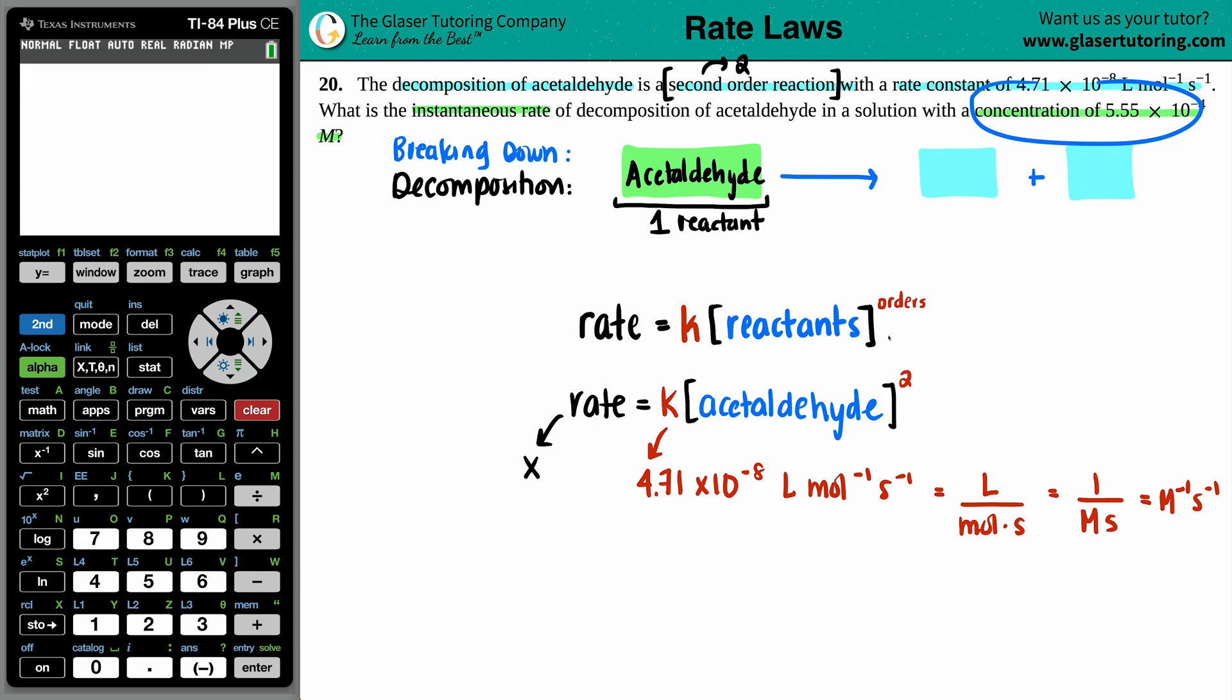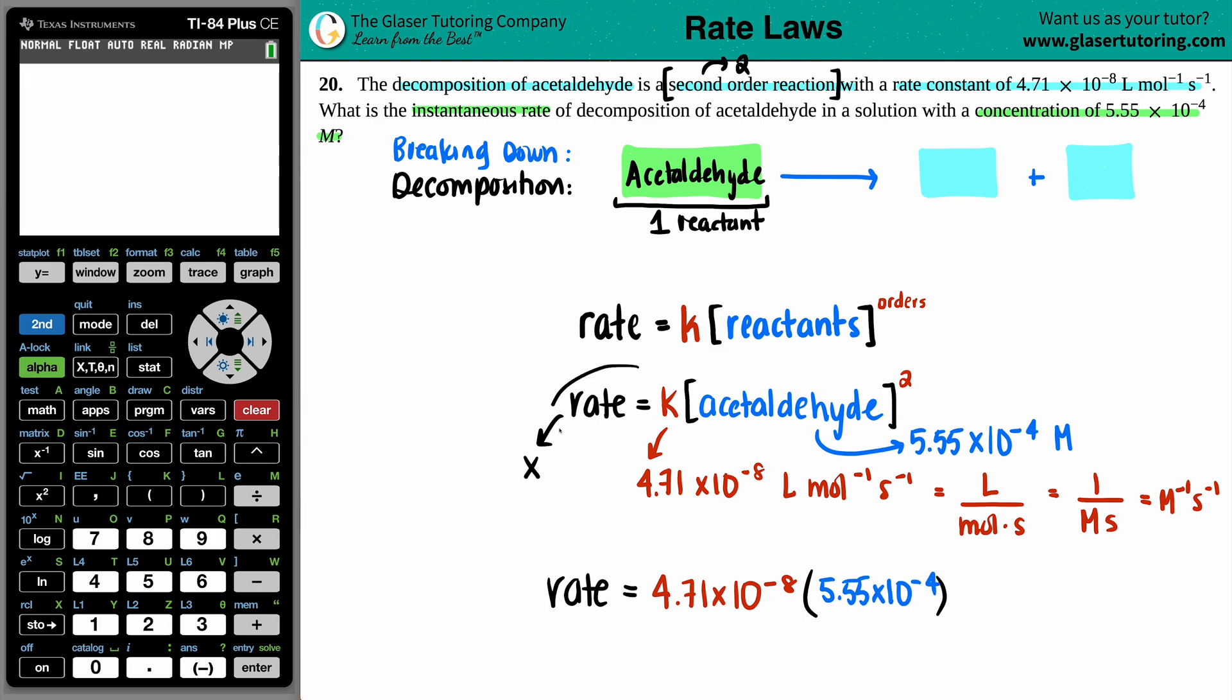So we have that. They did give us that concentration. So the acetaldehyde concentration is 5.55 times 10 to the negative fourth molarity. So let's find out that rate. Rate equals the k value, which was 4.71 times 10 to the negative eighth. And then we're just going to multiply it by the molarity, which is 5.55 times 10 to the negative fourth. And now according to that rate law, that concentration of acetaldehyde has to be raised to the second because it was second order. So we're going to take that 5.55 times 10 to the negative fourth and square it.